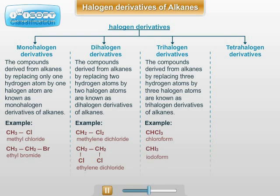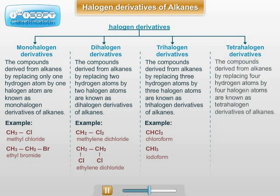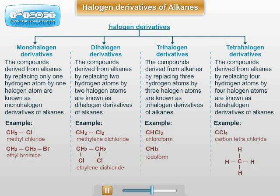Tetrahalogen Derivatives of Alkanes: The compounds derived from alkanes by replacing four hydrogen atoms by four halogen atoms are known as Tetrahalogen Derivatives of Alkanes. Example: CCl4, that is Carbon Tetrachloride.